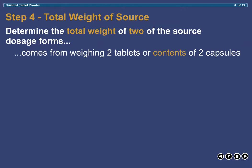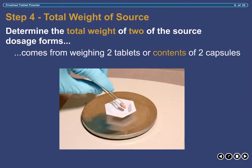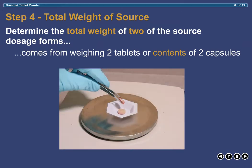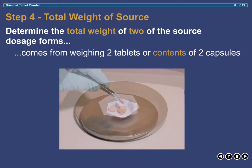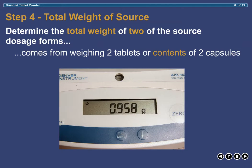If you are using commercially prepared tablets as your source of active ingredient, weigh two tablets and record that weight. Alternatively, if you are using commercially prepared capsules, weigh the contents of two capsules and record that weight. Understand that if using capsules, you are interested in the weight of the contents only, not the combined weight of contents and capsule shells. Inadvertently weighing the capsule shell will incorporate error into your calculations and final product. In this example, the weight of two 300mg allopurinol tablets is determined to be 0.958g or 958mg.